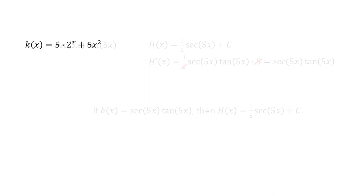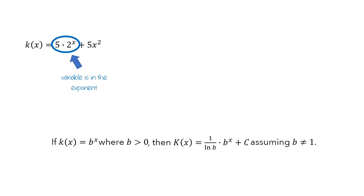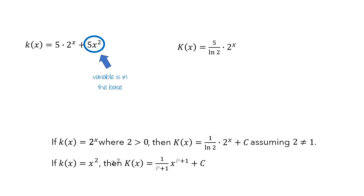Next, let's look at k. The first term has a variable in the exponent, so it's an exponential function, and we use the corresponding rule. The base is 2, so the first term of the antiderivative is 1 over the natural log of 2 times 2 to the x, multiplied by the coefficient 5. The second term has the variable in the base raised to a fixed power of 2, so we use the power rule: 1 over (2+1) times x to the (2+1), also multiplied by 5, then add the constant c.